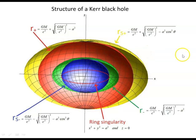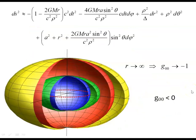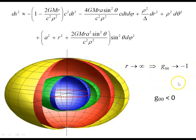We're interested in the region outside the outer stationary limit surface, and what happens to the sign of the zero-zero component of the metric as an observer moves inwards from the exterior into the interior region. The spacetime interval or line element is given in Boyer-Lindquist coordinates, and as seen in previous videos, it asymptotically approaches negative one for large values of r. Outside the black hole, the time-time component, the zero-zero component of the metric, is negative.